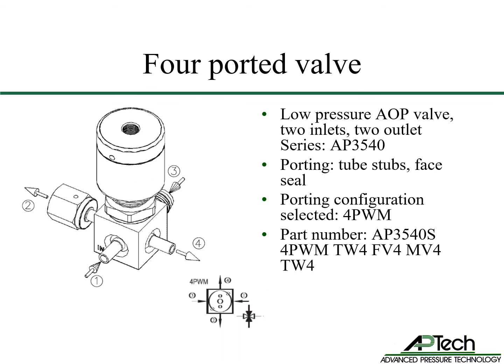Now let's configure the four-ported valve — also a 3540. Gas flows through ports number one and three, which are inlet ports. Port number one is a quarter inch tube stub, and port number three is quarter inch male face seal. Ports number two and four are outlet ports downstream of the valve seat. Port number two is quarter inch female face seal, and port number four is quarter inch tube stub. Looking at APTEC's Product Note number 443, a four-ported valve with two inlet ports and two outlet ports opposite is a 4PWM flow pattern. The ports are specified in sequential order starting with port number one, so the part number is AP3540S4PWMTW4FV4MV4TW4.